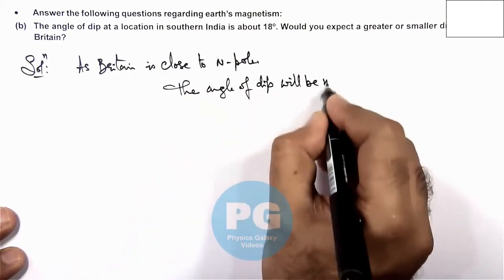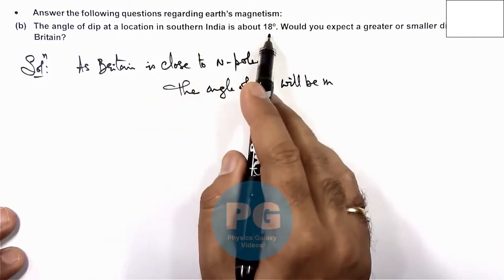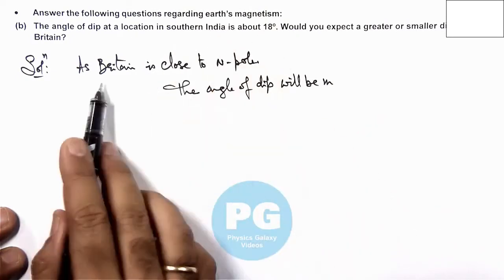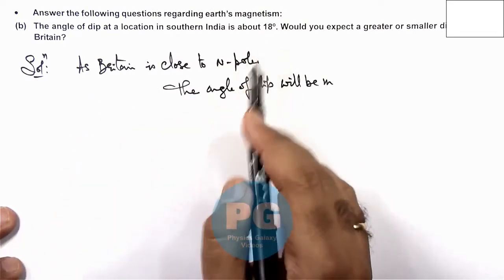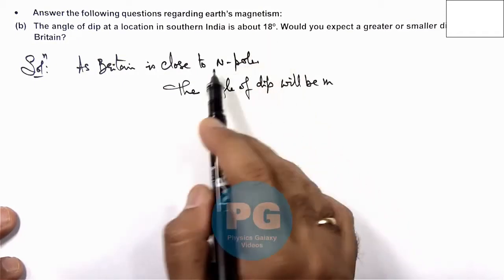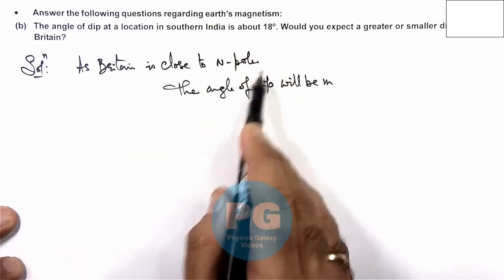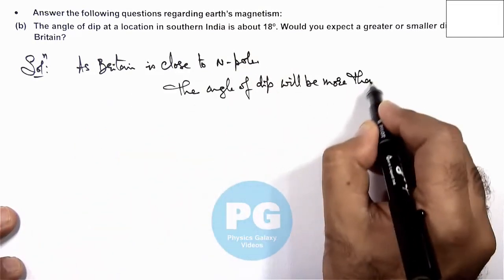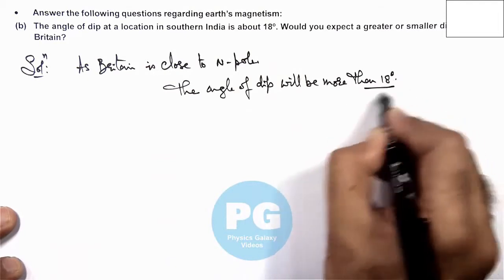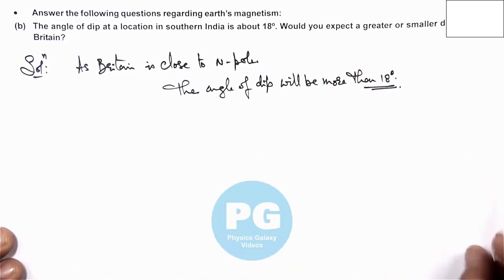In India or in southern India, the dip is eighteen degrees which is close to the equator compared to Britain. The angle of dip will be less here because we know close to the equator the angle of dip is less, and close to the poles the angle of dip is always more. So we can say, as Britain is close to the North Pole, the angle of dip will be more than eighteen degrees compared to any location in India.